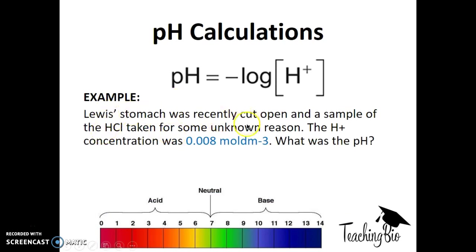Here's an example question for you to try. Lewis's stomach was recently cut open and a sample of hydrochloric acid was taken for some unknown reason. The H+ concentration was 0.008 moles per decimeter cubed. What was the pH? All I do is pH equals minus log to the base 10 of 0.008 to get 2.096. On our scale, that makes sense—it's in the acid pH range. Hydrochloric acid is an acid. Therefore, the pH can be rounded to 2.10.